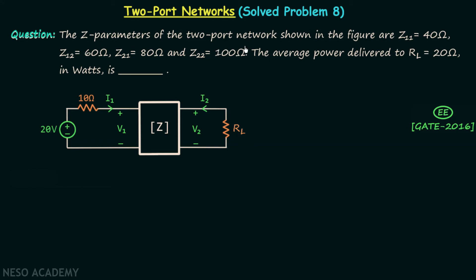The Z parameters of the two port network shown in the figure are 40, 60, 80, and 100 ohms. The average power delivered to the load resistance RL, which is 20 ohms in watts, is what we need to find. This is the two port network and we are required to find the power delivered to the load resistance RL equal to 20 ohms. Before I provide the solution, I want you to pause this video and try to solve this question on your own.